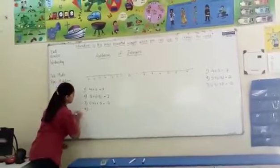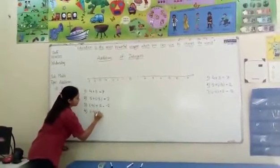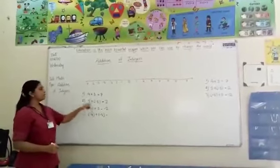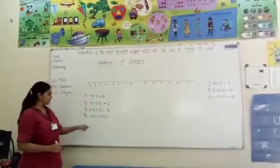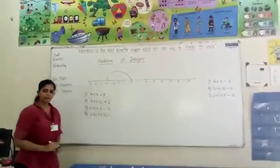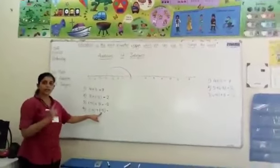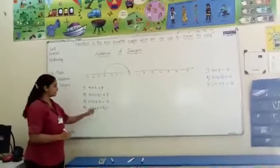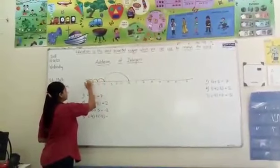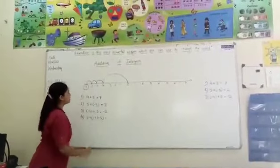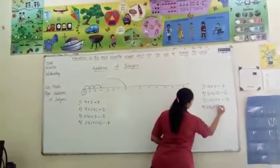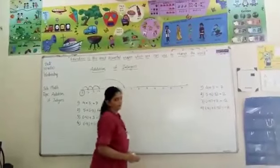Fourth example: minus 4 plus minus 3. Here both integers are negative, so we move towards the left side. First, from 0 to minus 4. Then, since the second integer is also negative, again move left — 3 steps: 1st, 2nd, and 3rd. The answer is minus 7. So minus 4 plus minus 3 is equal to minus 7.